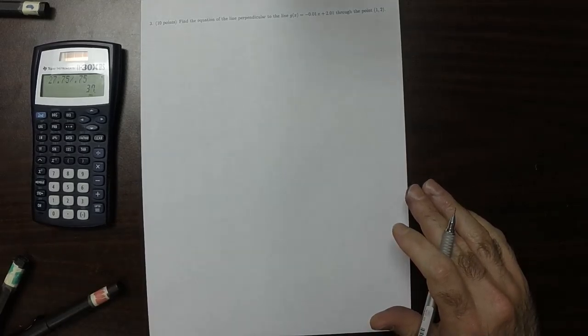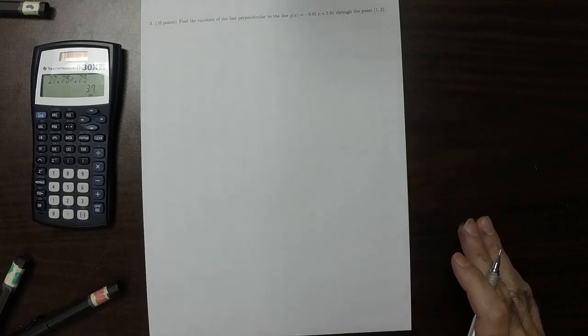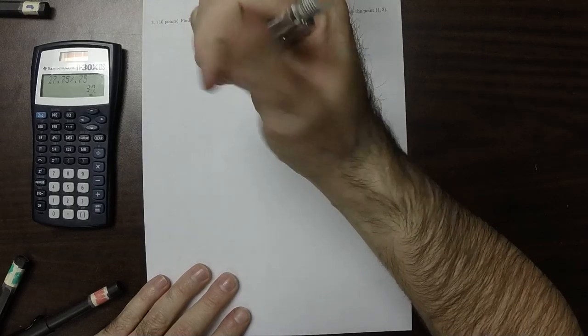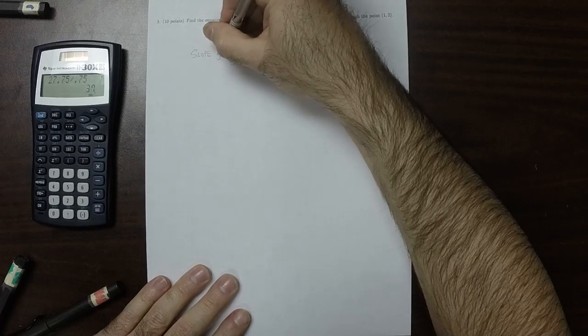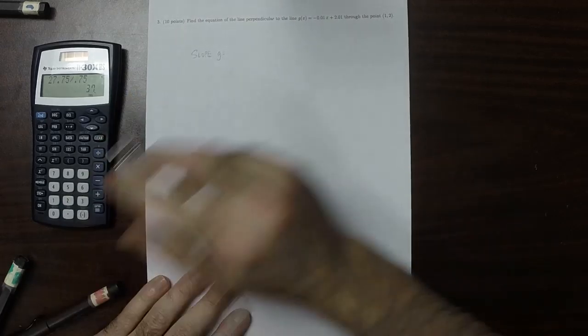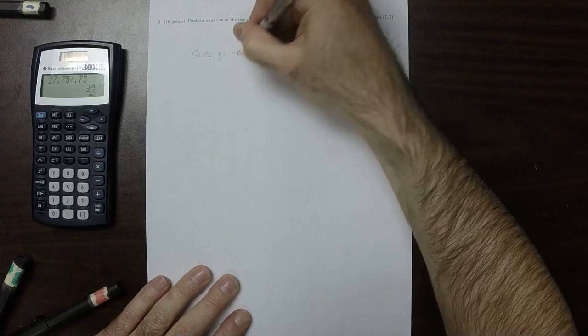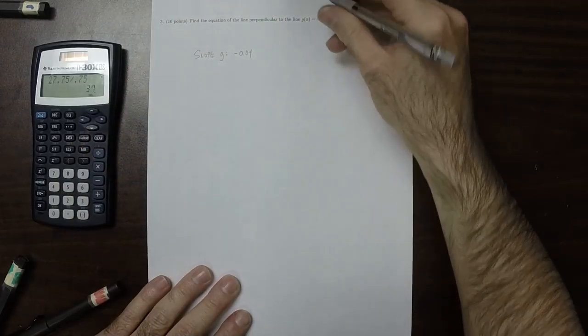So find the equation of the line perpendicular to the line g that's passing through the point (1, 2). So then the slope of g is negative 0.01. That's that coefficient.